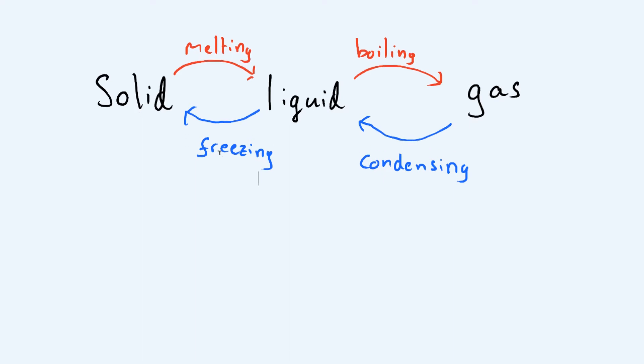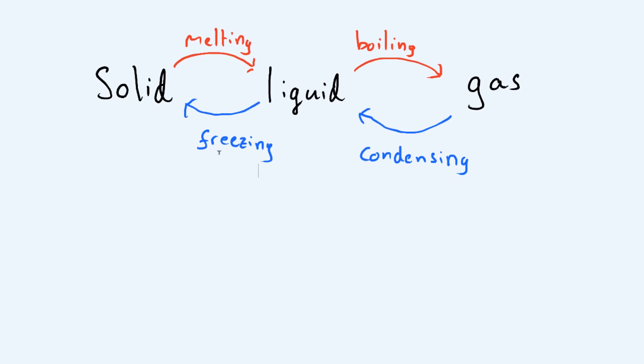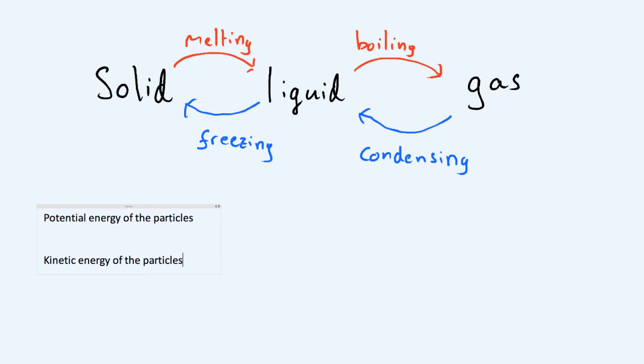These changes happen as a result of the internal energy of your system, where your system is just the object or material you're talking about. The energy inside your system consists of the potential energy of the particles — because they have a position, they have a potential energy — and also the kinetic energy of the particles.